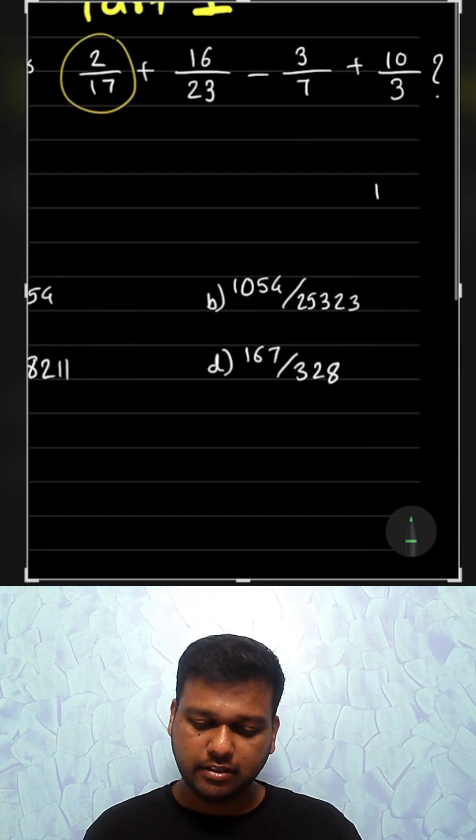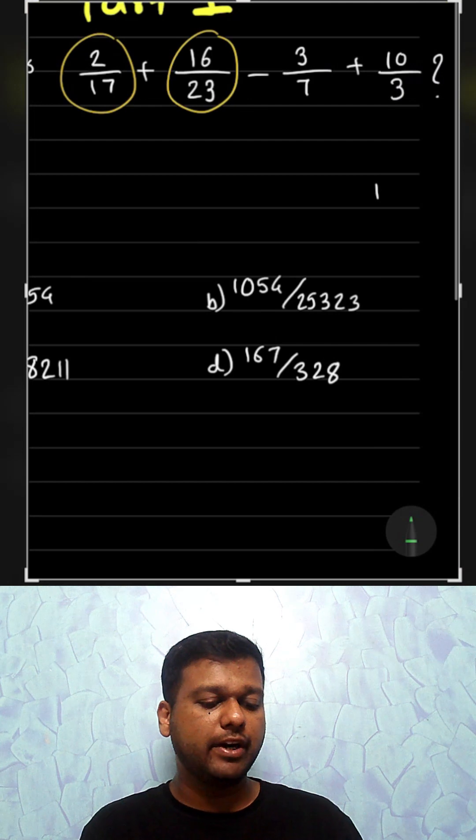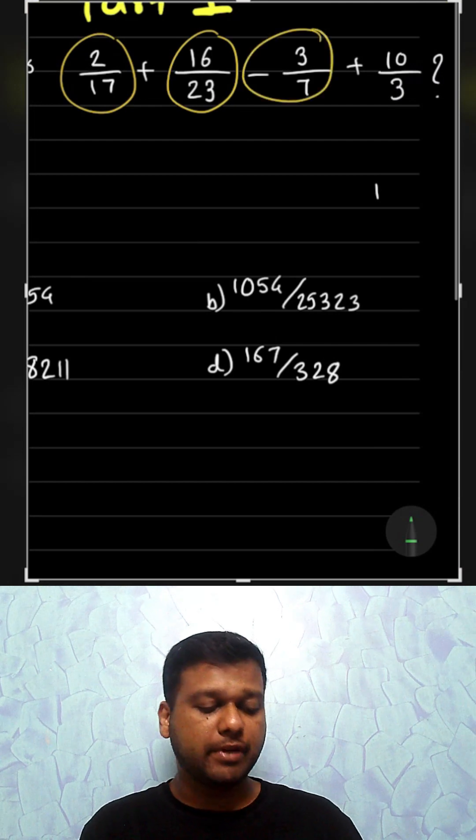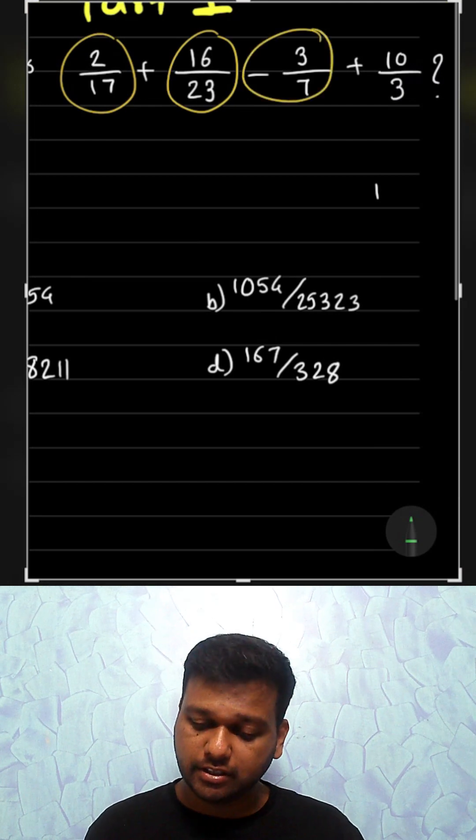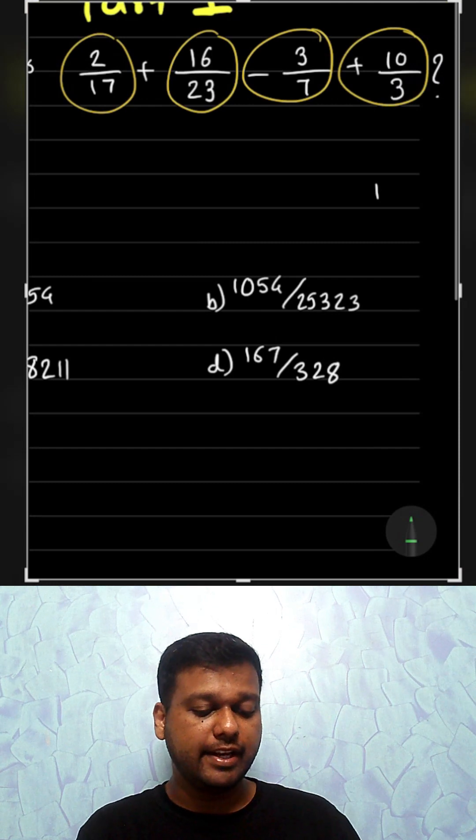So 2 by 17 M plus. Then add this. So 16 by 23 M plus. We have to subtract this. So 3 by 7 M minus. Then add this. So 10 by 3 M plus.